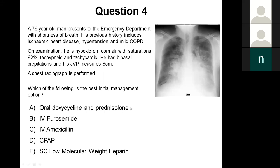Oral doxycycline and prednisolone treats mild COPD exacerbation — exacerbations often show a normal chest radiograph. IV amoxicillin treats community-acquired pneumonia, which more typically shows unilateral shadowing and the history doesn't fit. Subcutaneous low molecular weight heparin would be for PE, which also more typically shows a normal chest radiograph rather than the bilateral changes seen here.